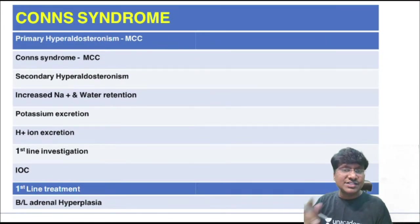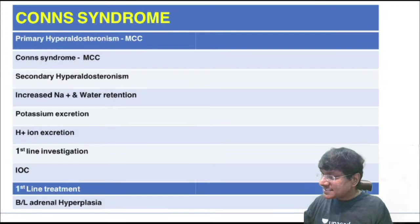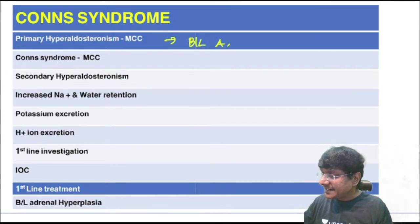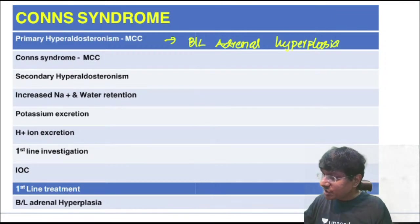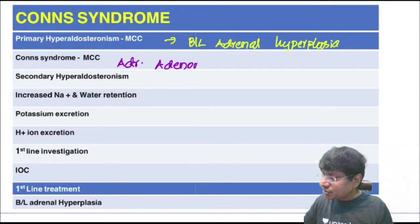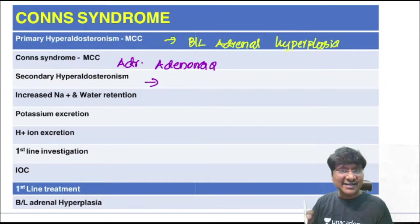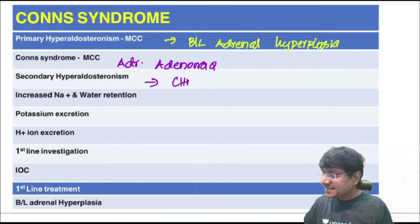Quick recap of Conn's syndrome: most common cause of primary hyperaldosteronism is bilateral adrenal hyperplasia. Most common cause of Conn's syndrome specifically is adrenal adenoma. Causes of secondary hyperaldosteronism are congestive heart failure and cirrhosis of liver.